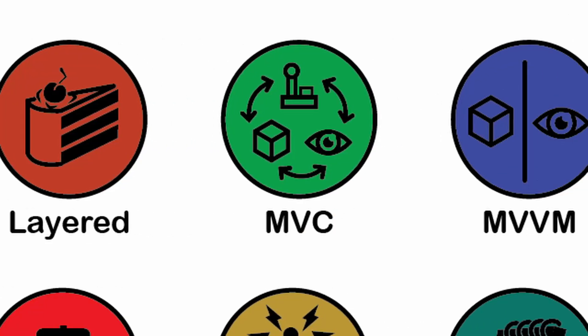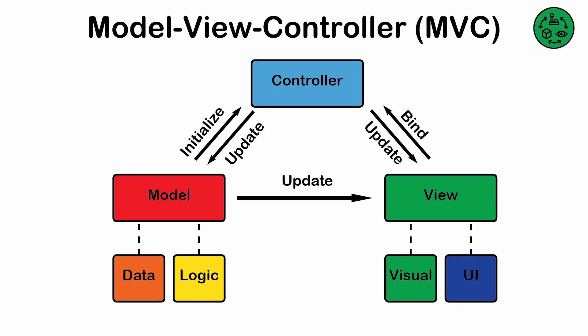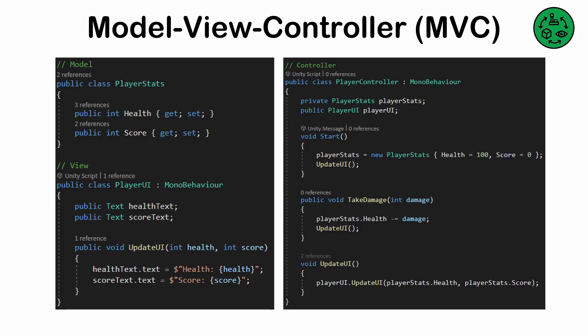Model-View-Controller, or MVC. A fancy way of saying you should separate logic from visuals from input, and have these three systems talk to one another rather than rely on direct dependencies or tight coupling. In the MVC pattern, data and logic are usually grouped together under model, though you might consider splitting those as well in larger projects.